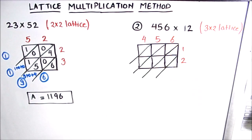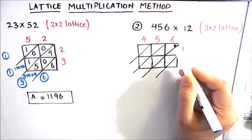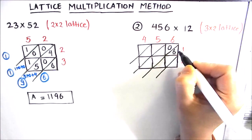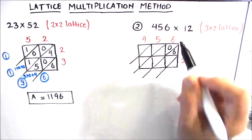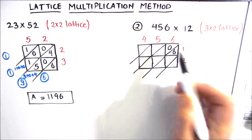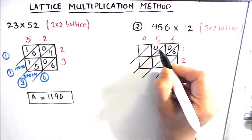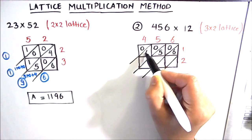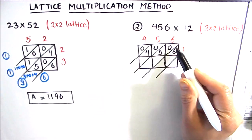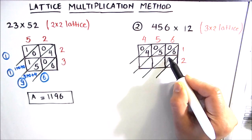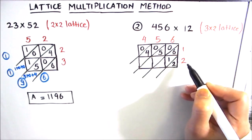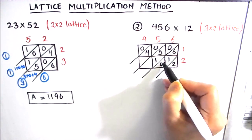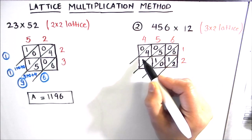We start multiplying the number in the first row by each column digit. 1 times 6 is 6, written as 06. 1 times 5 is 5, written as 05. 1 times 4 is 4, written as 04. Then for the second row: 2 times 6 is 12, written as 1 and 2. 2 times 5 is 10, written as 1 and 0. 2 times 4 is 8, written as 08.